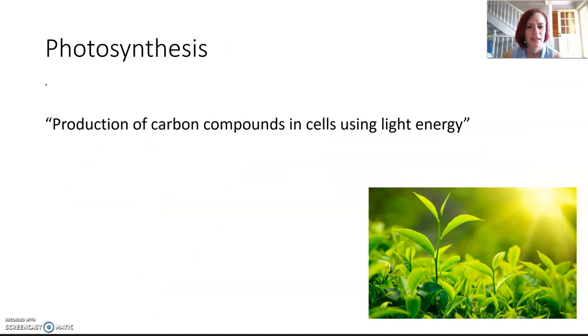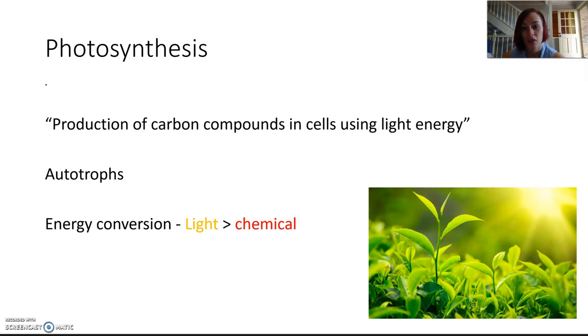Photosynthesis can be described as the production of carbon compounds in cells using light energy. Carbon compounds are the ones we've discussed already, mainly carbohydrates, but also lipids and proteins. Organisms with the ability to make carbon requirements using that light energy and simple organic molecules are called autotrophs. Auto meaning they can do it themselves, and they make that energy. The energy is converted from light energy into chemical energy, as we've discussed.